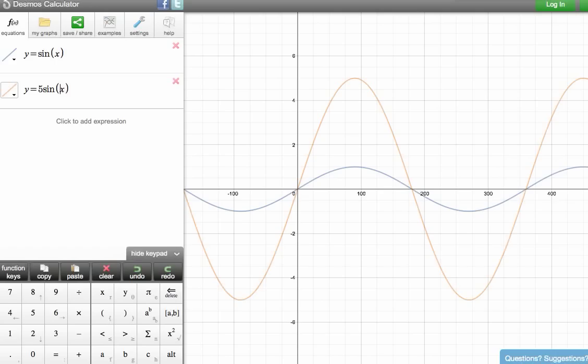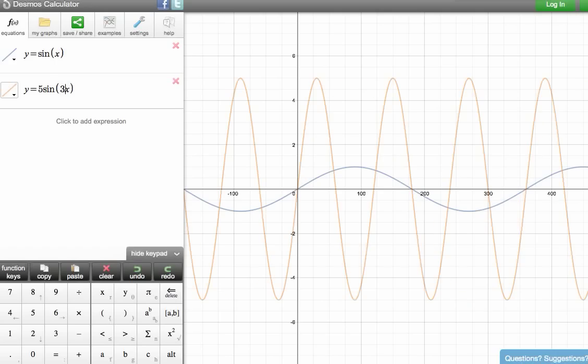Let me now just put that 3 in and see what happens. And immediately what you see is the amplitude has stayed the same, but the period has changed. It's compressed the curve. In fact, sine of 3x does a cycle in a third of the time of sine of x.